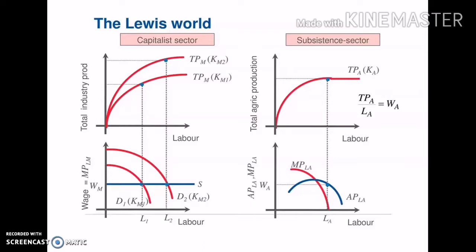It shows a vertical line. After LA, the sector operates with negative marginal productivity of labor, meaning production in that sector is no longer totally profitable. On the left side of this diagram, the capitalist or industrial sector's upper portion shows total industrial production. Compared to the subsistence sector, the productivity of the capitalist sector is much higher.